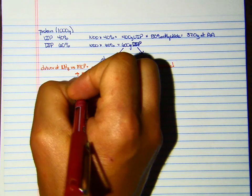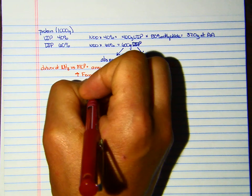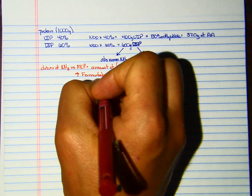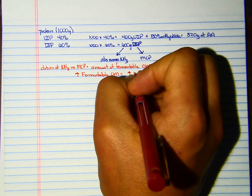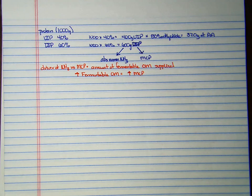The big driver—what determines whether it's ammonia or MCP—is the amount of fermentable organic matter supplied. Increase fermentable organic matter equals increased MCP. The opposite is true too: if you decrease the amount of fermentable organic matter, you decrease the MCP synthesized. This is true whether we're talking about the reticular rumen or the large intestine. The more fermentable organic matter, the more ammonia or nitrogen or DIP you can capture in microbial crude protein. That's what we want to do.